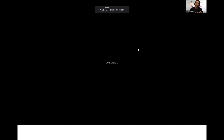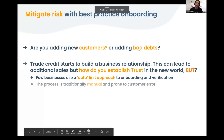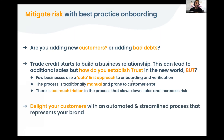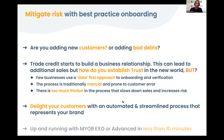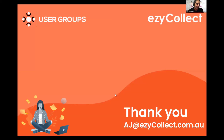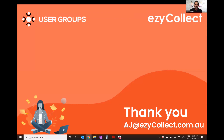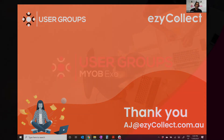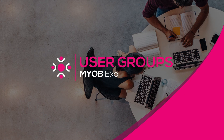To wrap up: having a process like this is something you should be doing today — whether you use Easy Collect or not. But please automate it and think about this process. If you do want to use Easy Collect, no API is required — it's a standalone product, up and running in less than 10 minutes, with real benefits to your business. For questions, reach out to the folks at Kilimanjaro or Enterprise, or myself, AJ, at easycollect.com.au. There's also a poll up now — please fill it in. Back to you, Grant.